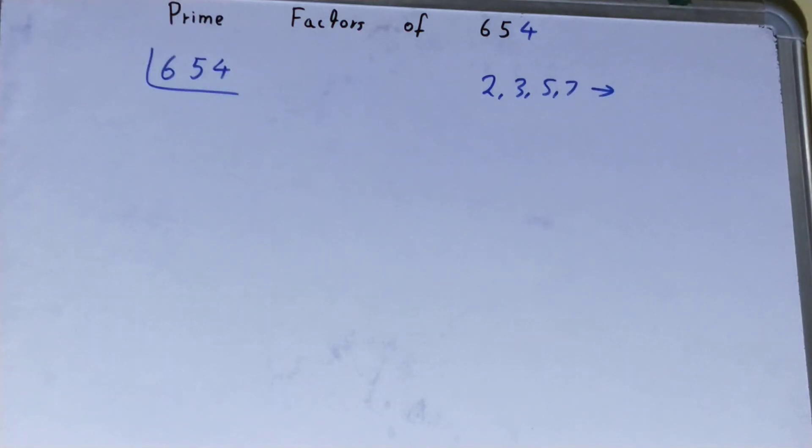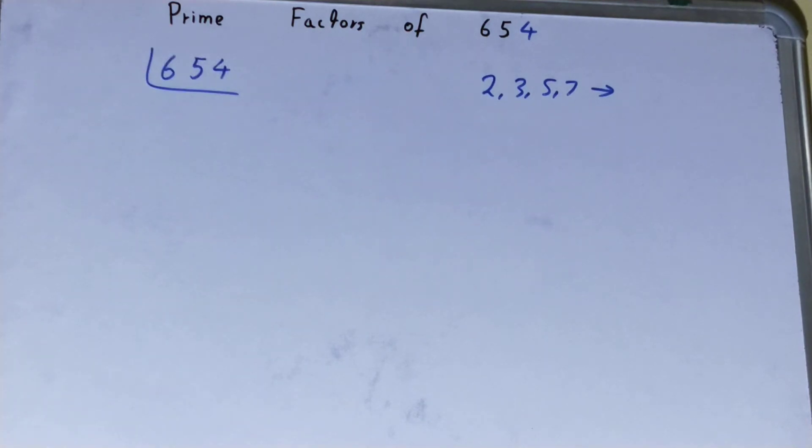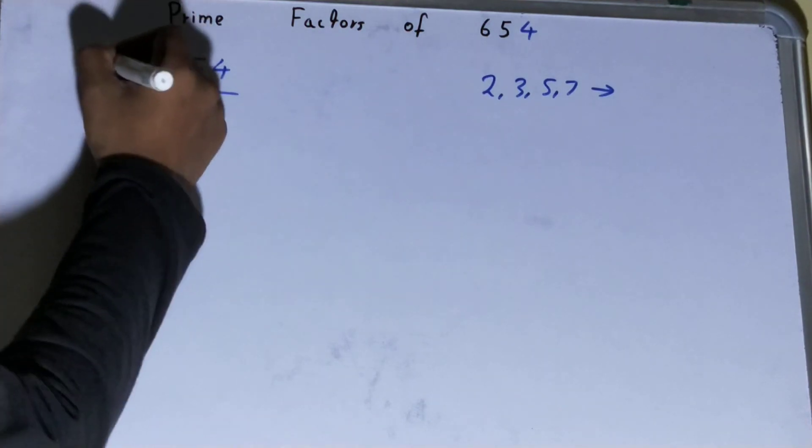We will be starting with the lowest prime number we have, that is two. Is the number 654 divisible by two? Clearly it is, because 654 is an even number. So divide it and you will be left with 327.